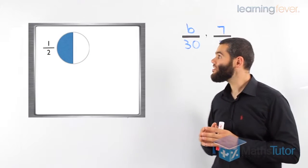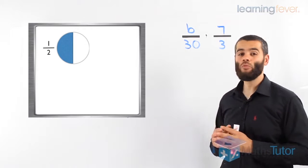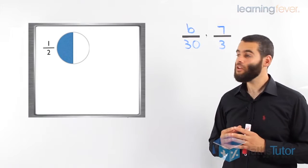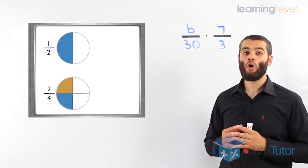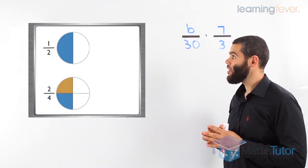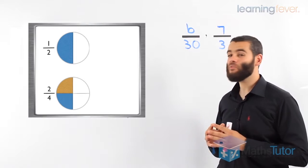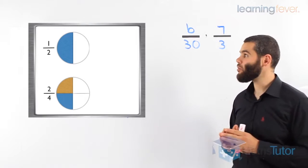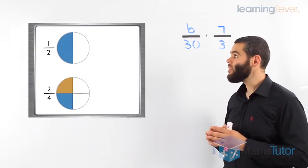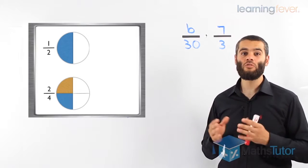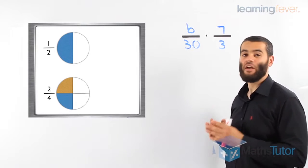Looking at this circle, we can see that half of it has been shaded, meaning one out of the two parts has been shaded. Look at the next diagram. This circle has four parts, and two of the four have been shaded. The same amount has been shaded in the top circle and in the bottom circle. However, they are written differently. So that means one over two has the same value as two over four — just written differently, but the same value has been shaded.